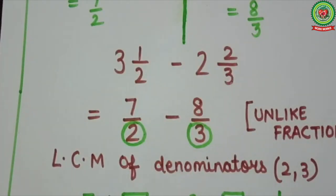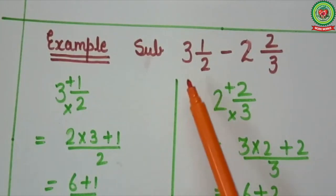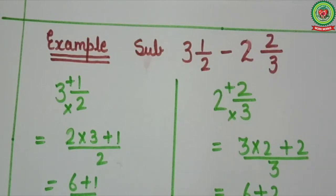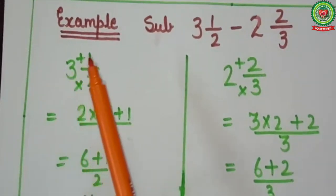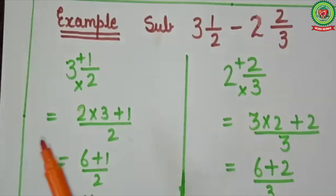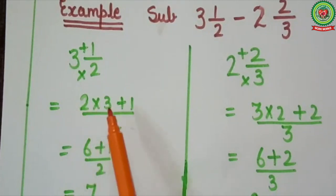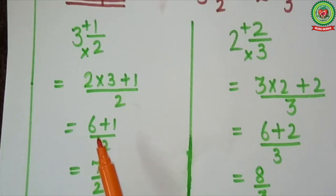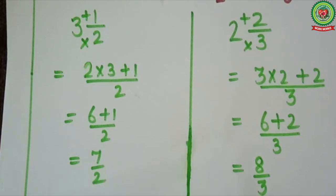Let's take one more example. Here we have to subtract 3 whole number 1 upon 2 and 2 whole number 2 upon 3. As you can see, it is given in mixed fraction form, so always first convert mixed fraction into improper fraction. We will change 3 whole number 1 upon 2 into improper: 2 into 3 plus 1 upon 2 — 2 threes are 6, 6 plus 1 upon 2 — that equals 7 upon 2.